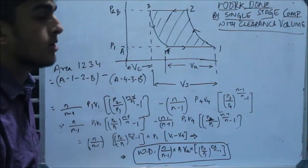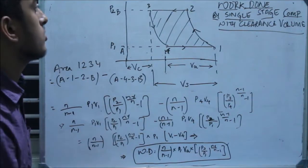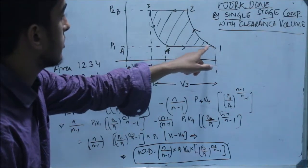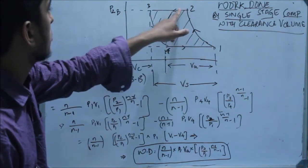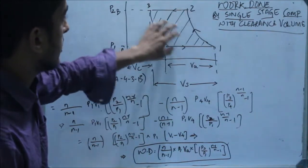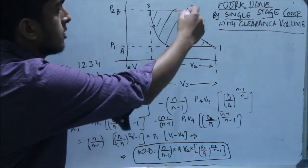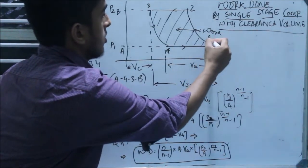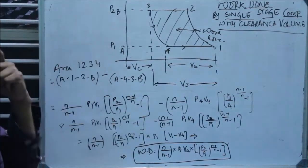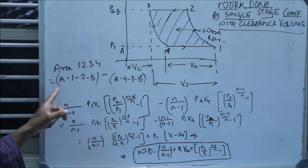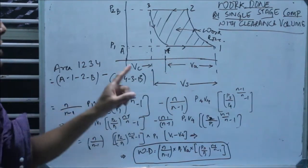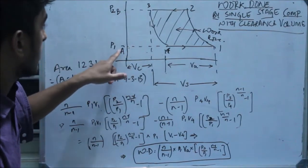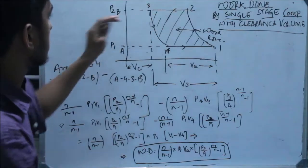For work done by the reciprocating compressor, we need to find out the area under the curve — that is, the area of region 1, 2, 3, and 4. This shaded area is the work done on the compressor. To find that, what we do is first find out the area of A12B and subtract A43B from A12B.